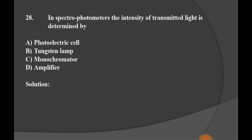In spectrophotometers, the intensity of transmitted light is determined by: Option A photoelectric cell, B tungsten lamp, C monochromator, D amplifier. The right option is photoelectric cell, option A.